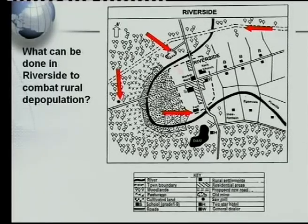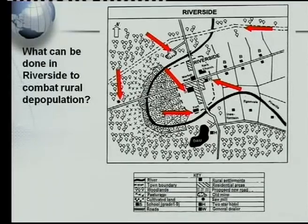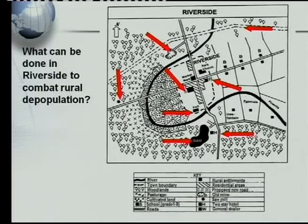Have a look at the old fort — that can be used for tourism. The school: if you look at the school in the key, the school is only from grade 1 to 9. So when somebody passes grade 9 here, they can't stay in Riverside — they've got to go to a school in the city. So what must happen is they will have to upgrade that school right up to grade 12 to keep the learners in Riverside. There's a general dealer — put in a different type of shop that can sell more things. We've got a hotel — it's a two-star hotel; why can't we upgrade it? And of course the dam can be used as a recreational area, with camping sites around it.